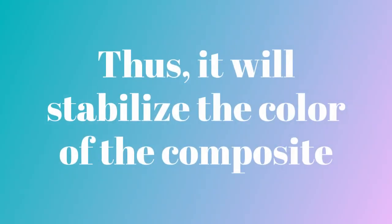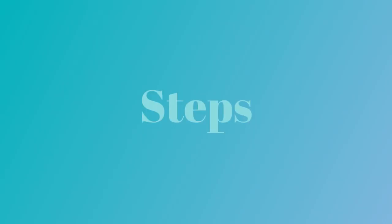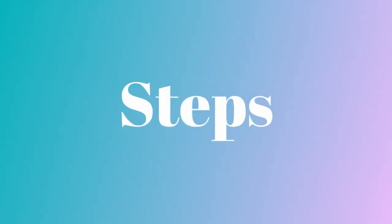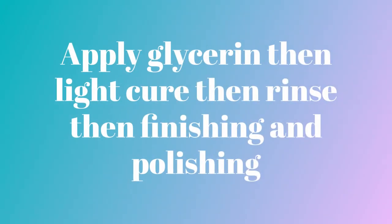Glycerin will stabilize the color of the composite so that there will be no change in the color of the composite with time. Now, what are the steps of glycerin application and when to apply it? Once you are done with the composite, you need to apply glycerin at the end.